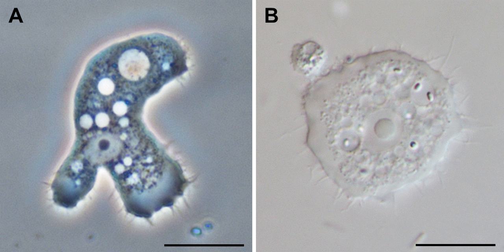Discosian amoebae lack hard shells, but some, like Cochleopodium and Korotnevella, secrete intricate organic scales which may cover the upper dorsal surface of the cell. No species have flagella or flagellated stages of life.